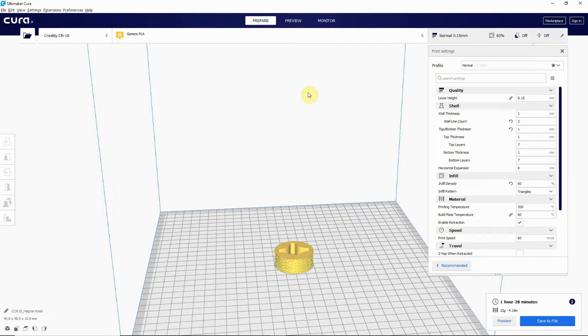As you can see down here, to print this thing, Cura estimates an hour and 28 minutes.